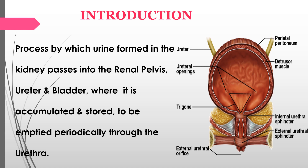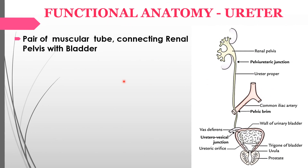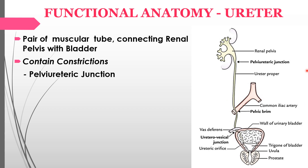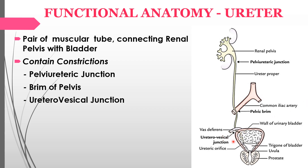Functional anatomy of the ureter: it is a pair of muscular tubes on either side connecting the renal pelvis with the bladder. It contains constrictions at the pelvi-ureteric junction, at the pelvic brim where it crosses the common iliac artery, and at the ureterovesical junction where it crosses the vas deferens and opens at the trigone.